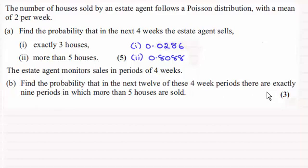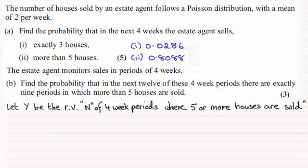For this one here, part B, what I need to do is to define a new random variable. I'm going to say that that random variable is Y. Let Y be the number of 4 week periods where 5 or more houses are sold.